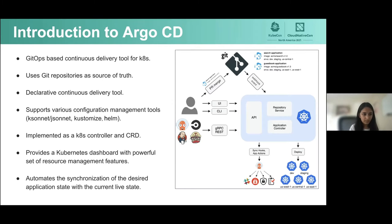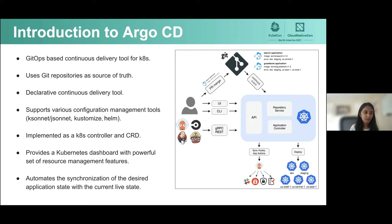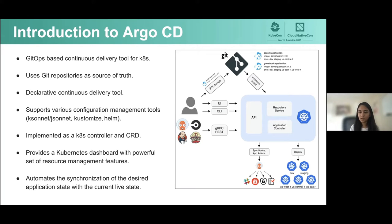Argo CD makes sure that an application's current live state is the same as its desired state. The diagram here explains how Argo CD works. First, you define your application manifests in a Git repository and connect that repository with Argo CD. Applications can then be synced programmatically via gRPC or REST API, or they can be synced via Argo CD's UI or CLI.